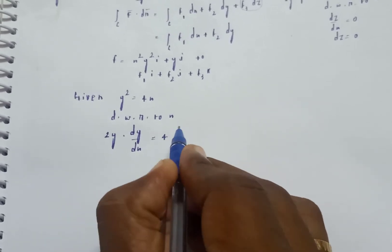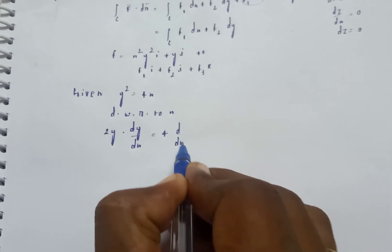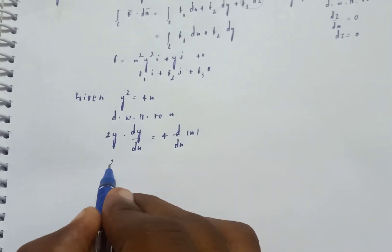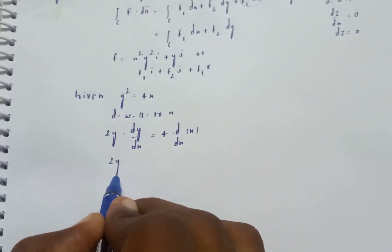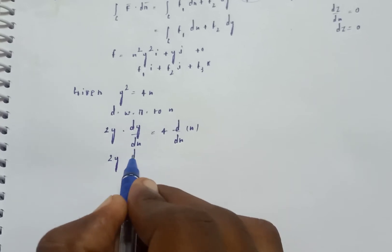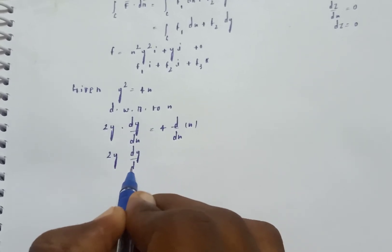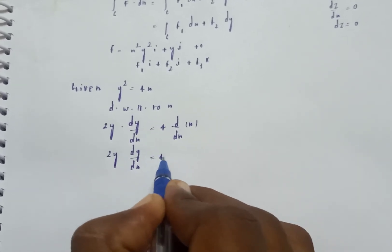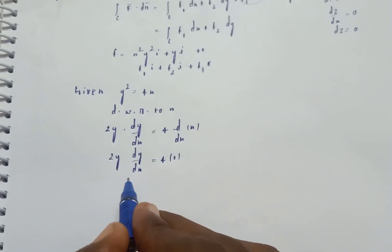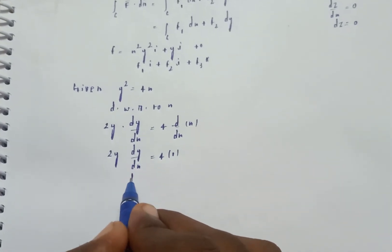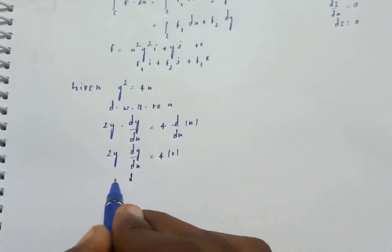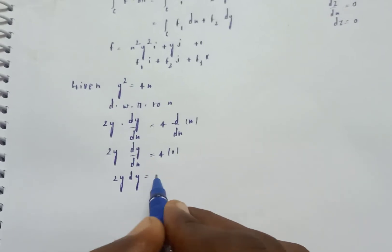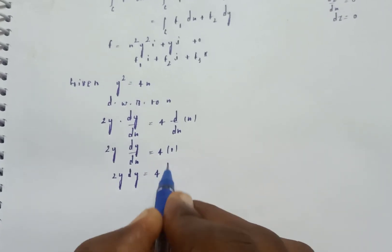Differentiating y squared equals 4x with respect to x: 2y dy by dx equals 4, so 2y dy equals 4 dx.